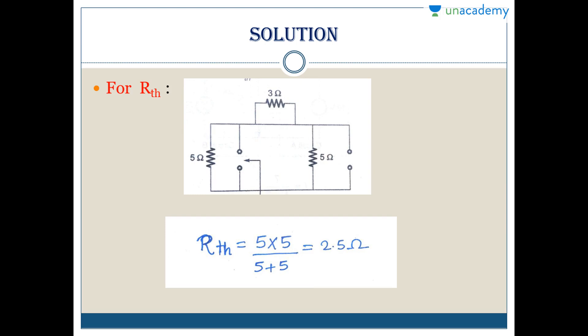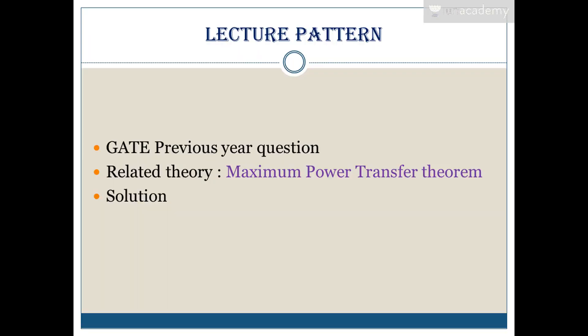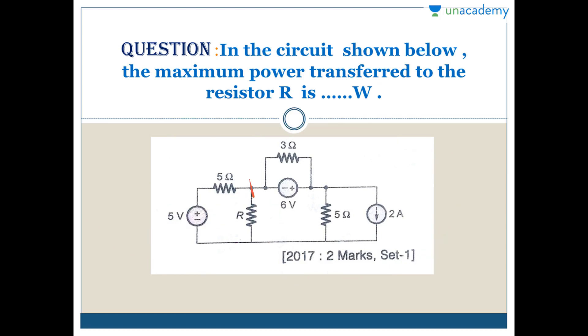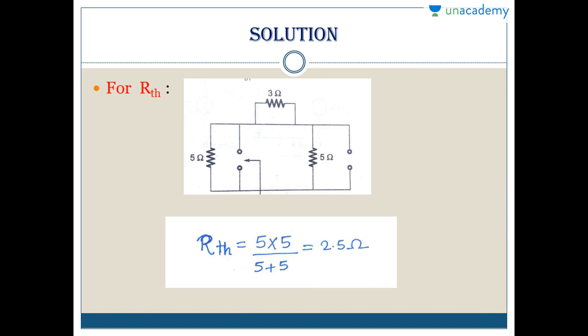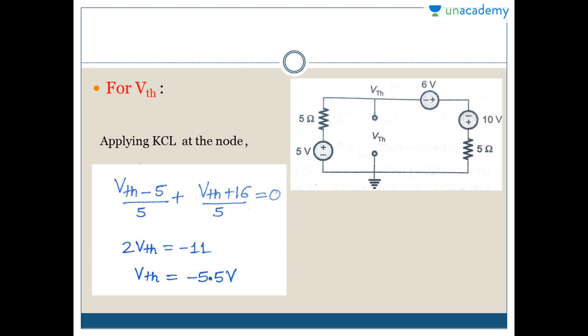This was our question, and we need to find RTH across this terminal. For finding RTH, we need to short circuit the voltage source and open circuit the current source. Here we have open circuit the current source, this is our RL load resistance. For maximum power transfer theorem, RTH should equal RL. I'm finding the RTH value across this point. It's 5 ohm and 5 ohm in parallel, so RTH equals 5 times 5 divided by 5 plus 5, which gives 2.5 ohm.